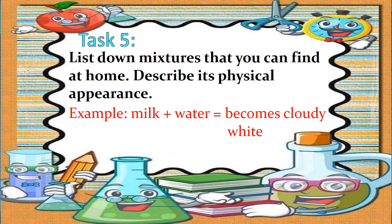Let's have another activity. This time, you can ask help from your parents or any member of your family. List down mixtures that you can find at home and describe their physical appearance. For example, adding milk and water — the mixture becomes cloudy white.